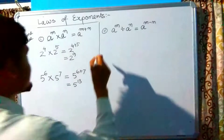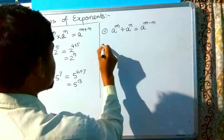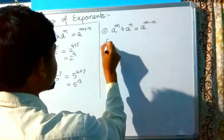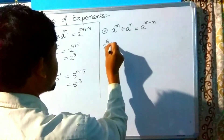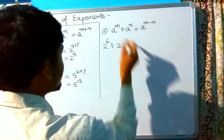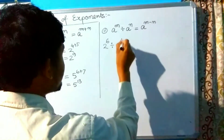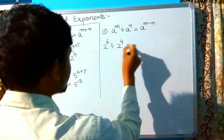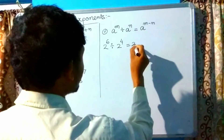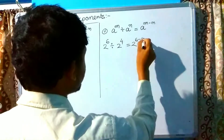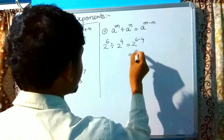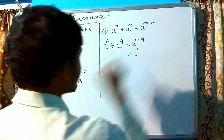Example: 2 raised to the power 6 divided by 2 raised to the power 4 equals 2 raised to the power 6 minus 4, which is 2 squared (2 raised to the power 2).